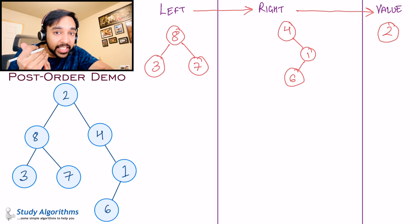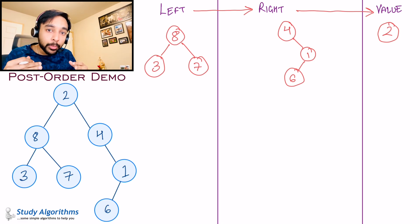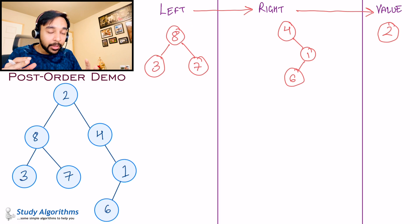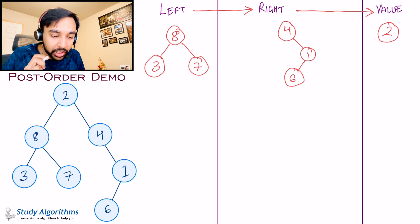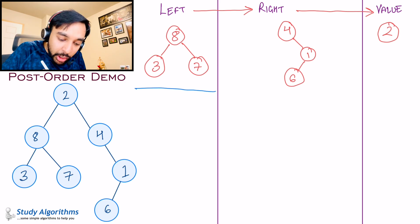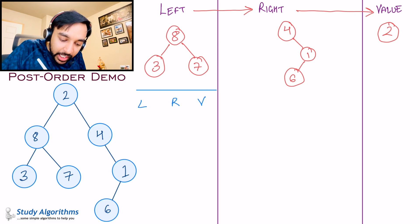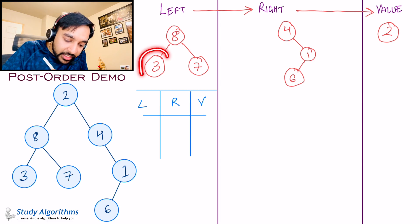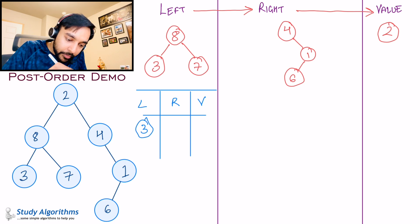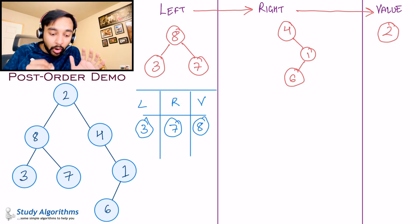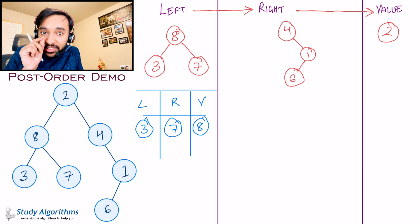As you know, a tree is a recursive data structure, so you need to keep applying post-order traversal until you reach a single node. For the left tree, you still have a subtree, so you apply post-order traversal on it again — left child, right child, then value. The left child is 3, so I write down 3. The right child is 7, so I write down 7. And the value is 8, so I write down 8. Now all of these are single nodes, so you can stop — this is your terminating condition.